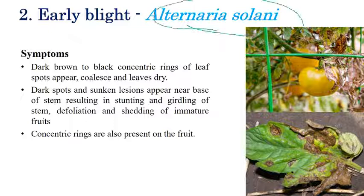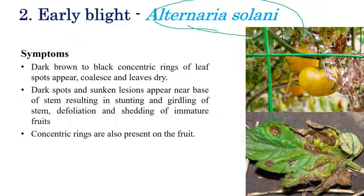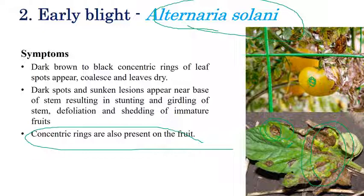The next disease is early blight, caused by Alternaria solani. The most prominent symptom is dark brown concentric rings on leaves. Initially small spots appear, which later coalesce forming big concentric rings. Yellowing and defoliation of leaves is common. In rare cases, concentric rings can also be observed on fruits.